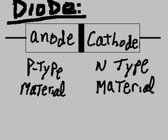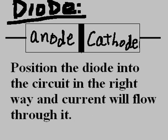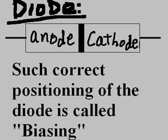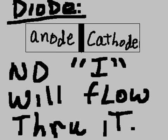The cathode is the N-type material and the anode is the P-type material. On a diode, that's the depletion region. Position the diode into the circuit in the right way and current will flow through it. Correct positioning of the diode is called biasing.